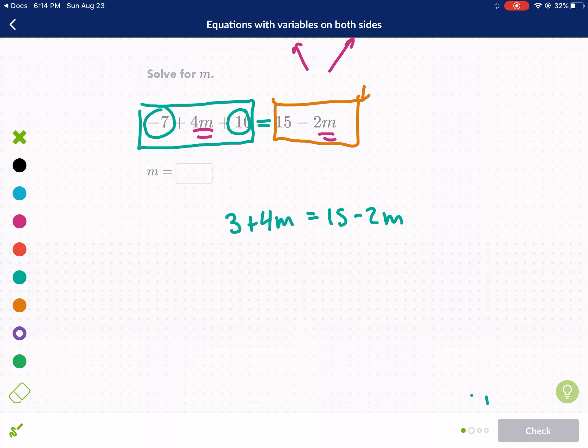So that should be your first step is just clean up. Clean up the mess. Second thing, as we suggested earlier, we need to identify our variables. So we have only one variable, one type of variable. It's m. But we have two different coefficients for m. We have negative 2m and 4m.